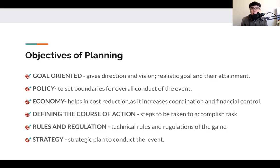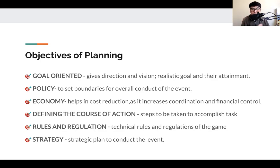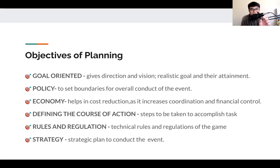Defining the course of action means the steps to be taken to accomplish the task. Whenever we are planning, we should have minute-to-minute or day-by-day planning — on this day, what are the things to be accomplished. Rules and regulation refers to the technical rules of the game. When planning a sports event, what are the technical rules? For example, in bottle flipping, how many flips do you need for a gold, silver, or bronze medal? How many minutes are you allowed? There are specific and more technical rules and regulation.